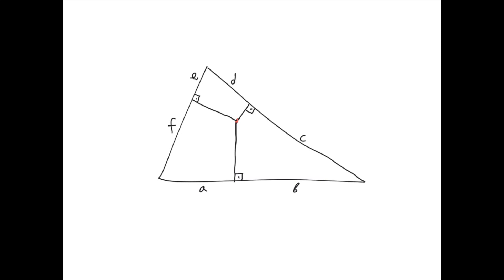Today we're going to talk about one of the many Carnot's theorems in geometry. Suppose you have a triangle and you choose a random point on the inside of the triangle, and you drop perpendiculars to the triangle sides. Then you split the sides into six segments a, b, c, d, e, and f. Carnot's theorem states that a² + c² + e² = b² + d² + f², and this theorem works in both directions.